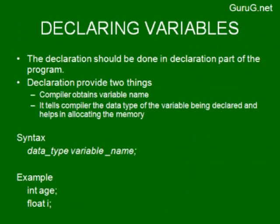Variable declaration should be done in the declaration part of the program. In C, there are sections such as the include section, declaration section, global declaration section, and main function definition. Inside main, you have local declarations followed by the inline coding. Declaration provides two things: it informs the compiler of the variable name, and it specifies the data type so the compiler allocates the required memory. The syntax is: data type followed by a space, then the variable name.